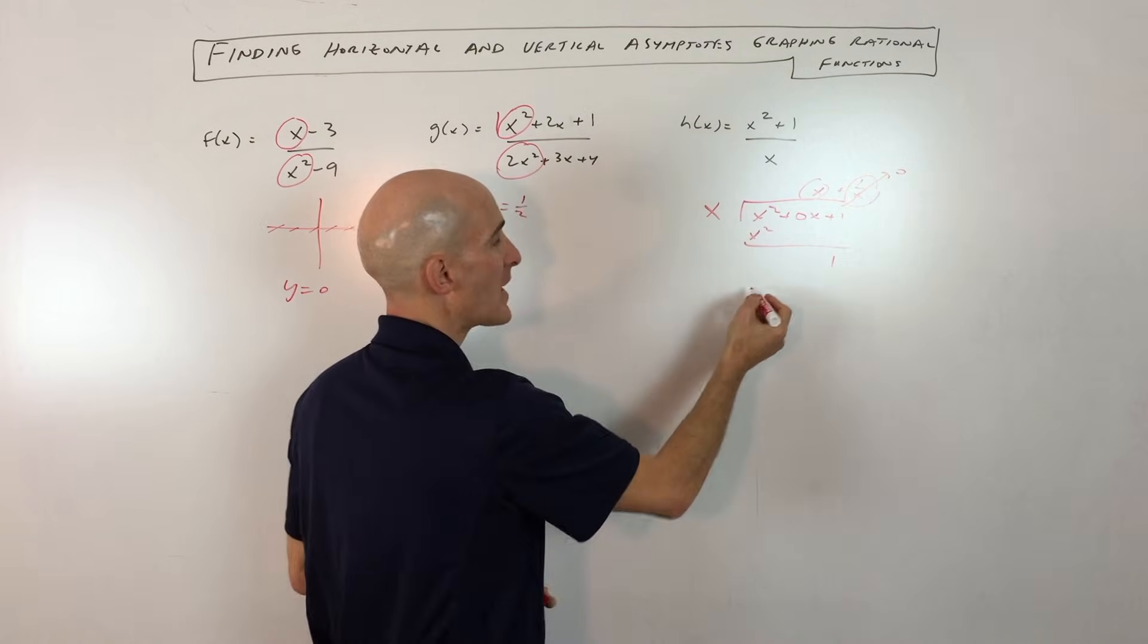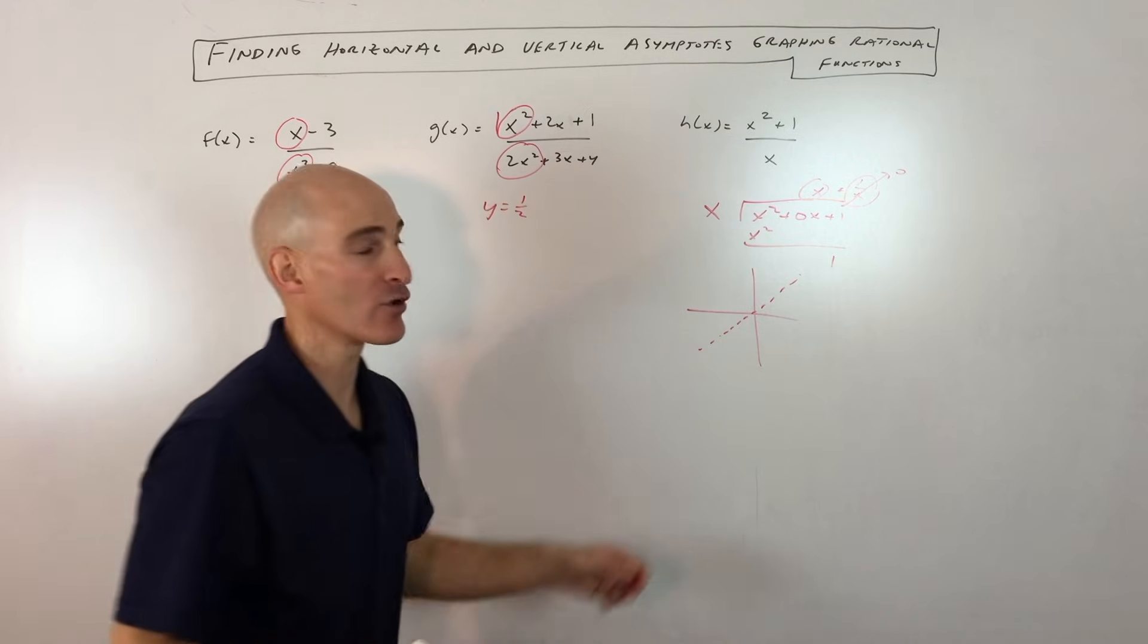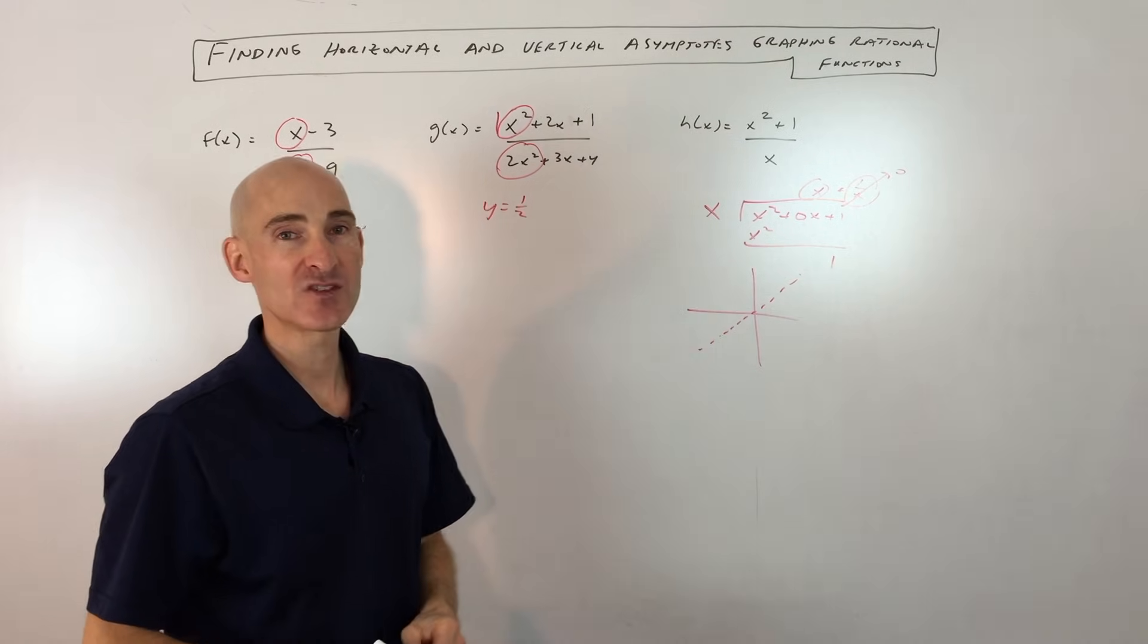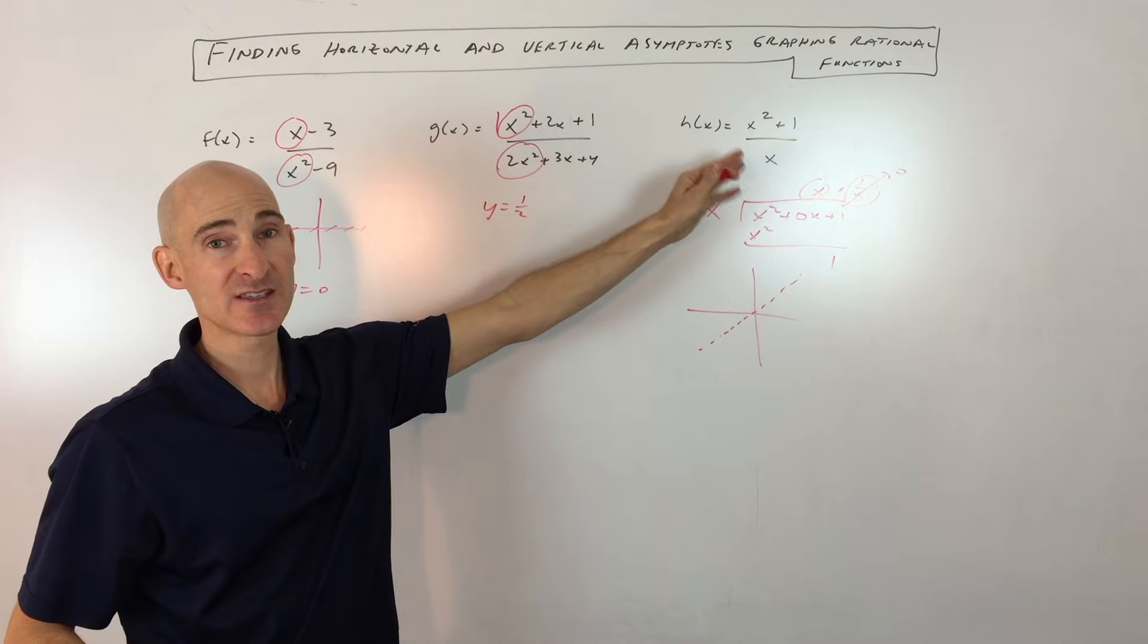So it's really in this case just y equals x. So we have a slant asymptote that looks like this on a 45 degree angle or a slope of 1. That's the slant asymptote. So this is discussing the horizontal and the slant asymptotes.